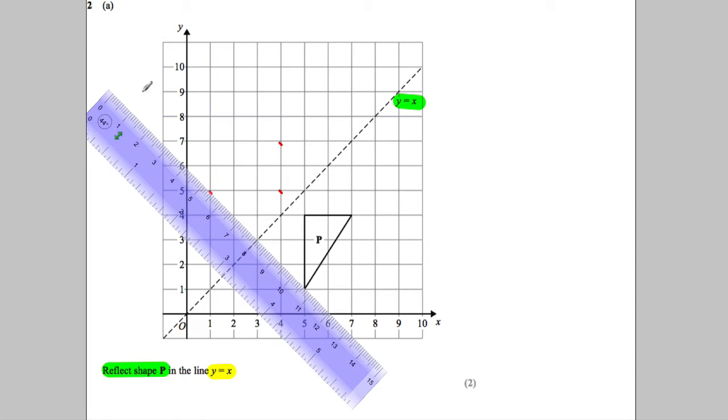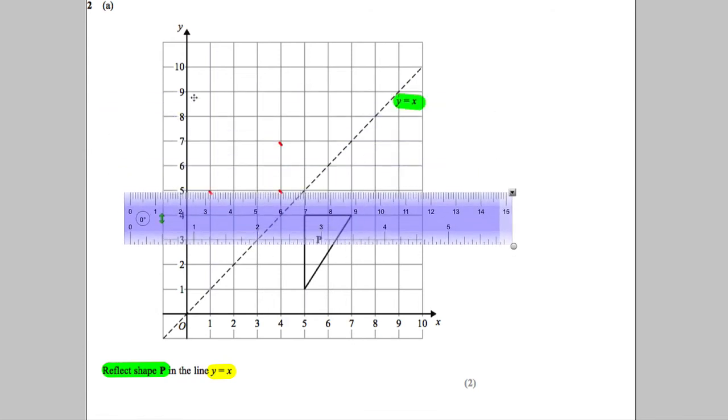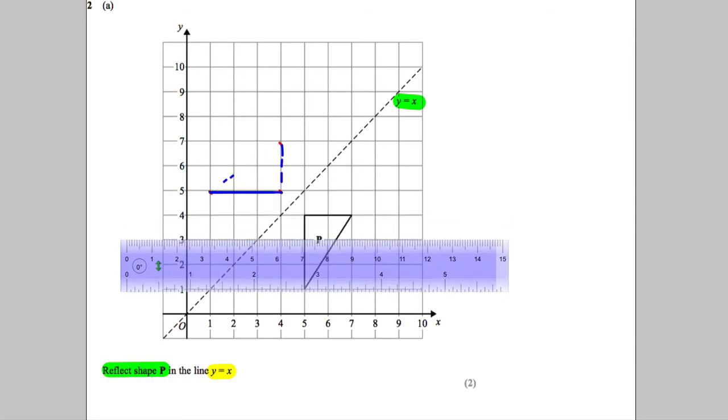And then what you do is with a ruler, you join up those points, okay. So what I do then is I just say, right, it goes there and then with the ruler again, I'd say it's there. And obviously with the ruler, I'm just doing it freehand now. You have a ruler and it would go here, like that. Okay, and that's the reflection of that shape in the line. So that's one way of doing it.